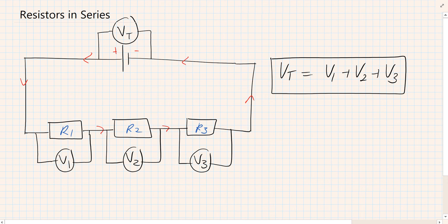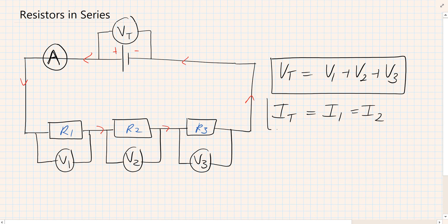We also know that current must flow through all three resistors and it's the same everywhere in the circuit. If we have an ammeter measuring the total current and we move it anywhere else in the circuit, the current is the same everywhere.